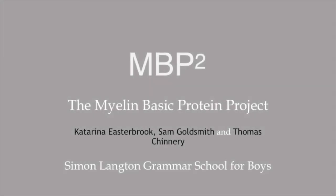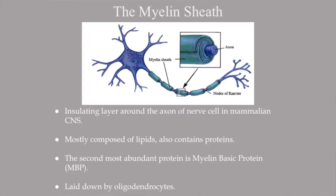Welcome to the MBP² project from Simon Langton Boys. Every neuron in the central nervous system is partially insulated by a myelin sheath along the conducting axon, and it's mainly made up of proteins and lipids. The most abundant of these proteins is proteolipid protein 1, and the second most abundant is myelin basic protein.